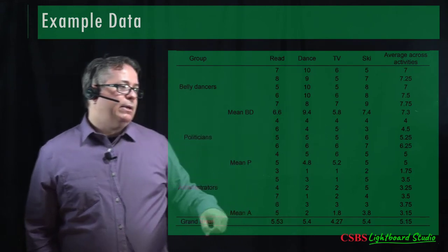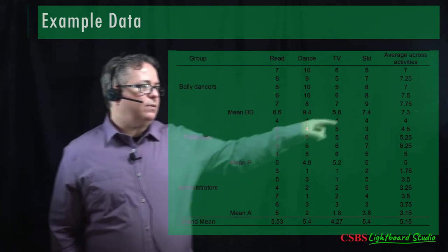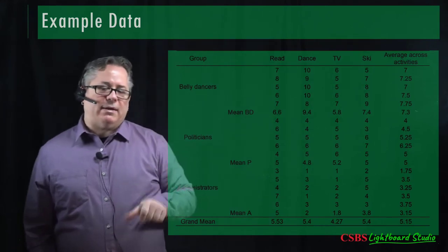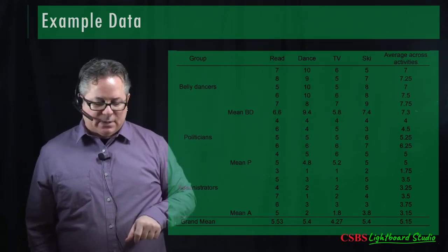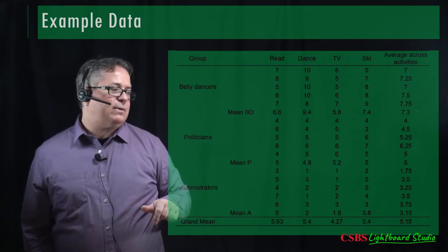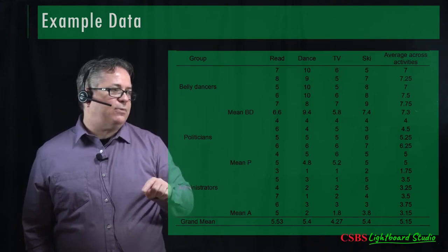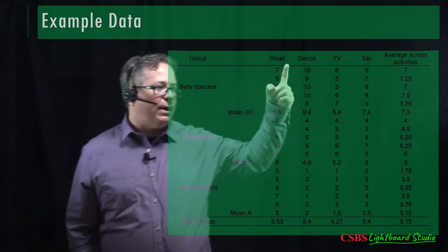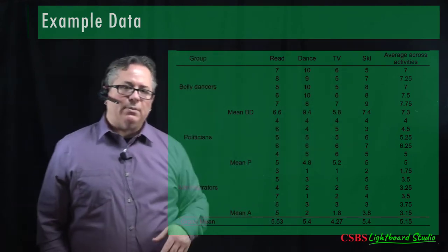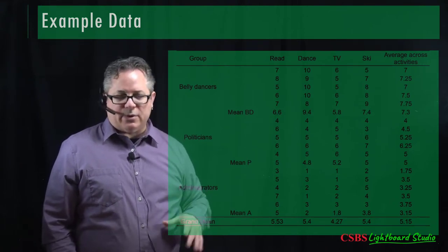We can use cell means to look at interactions, and use these averages to create those S and A-by-S factors that are the error terms — an S-within-A factor and a B-by-S interaction for the within-groups repeated measures portion. But that's not what we're going to do here; we're going to do this in a MANOVA framework.